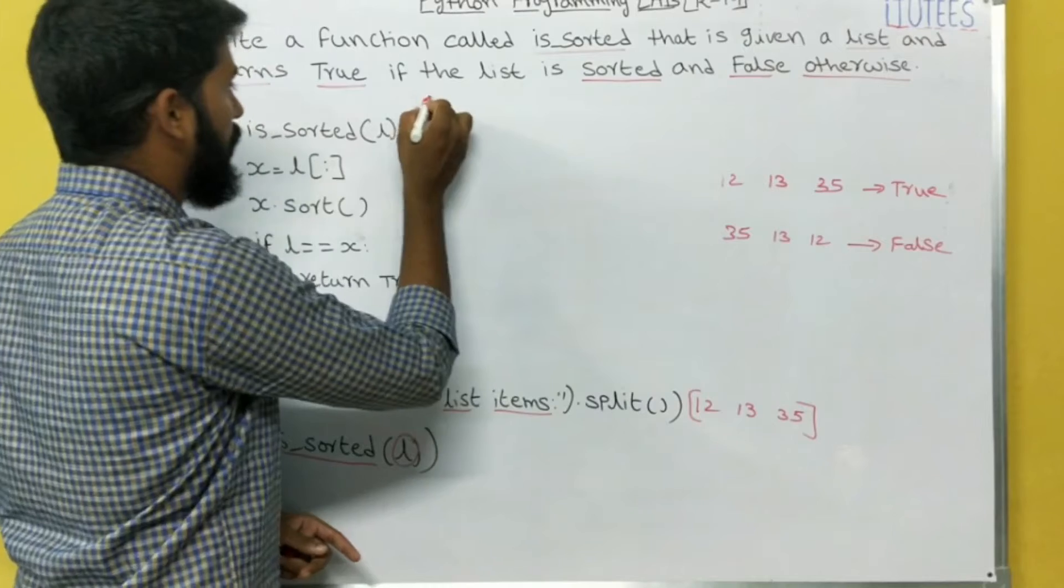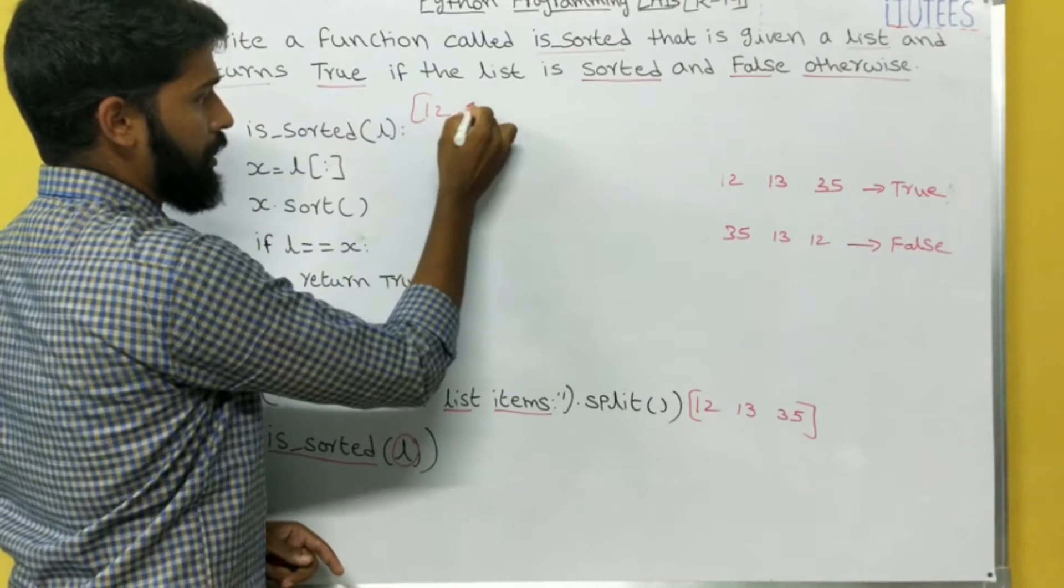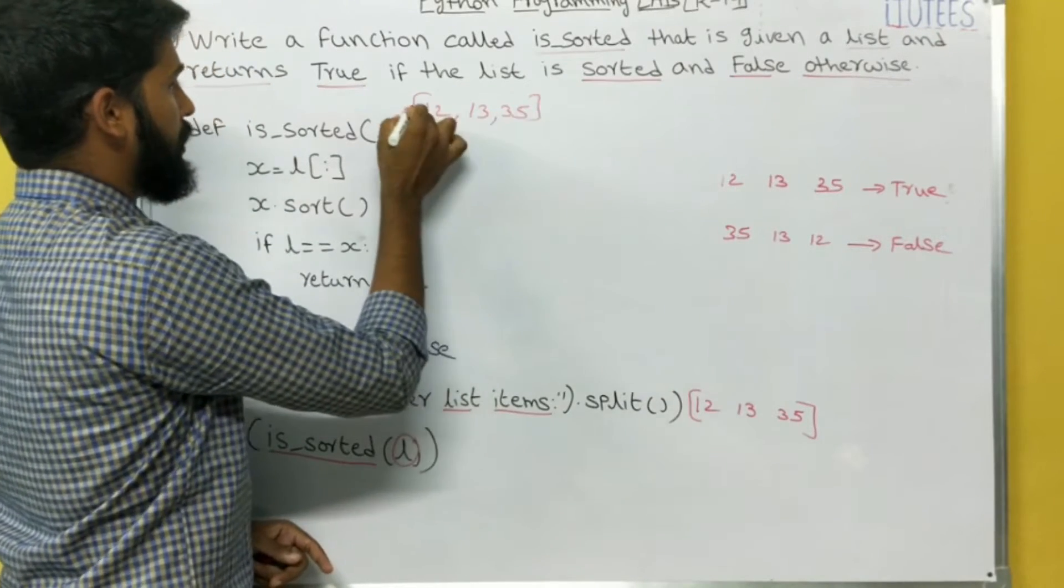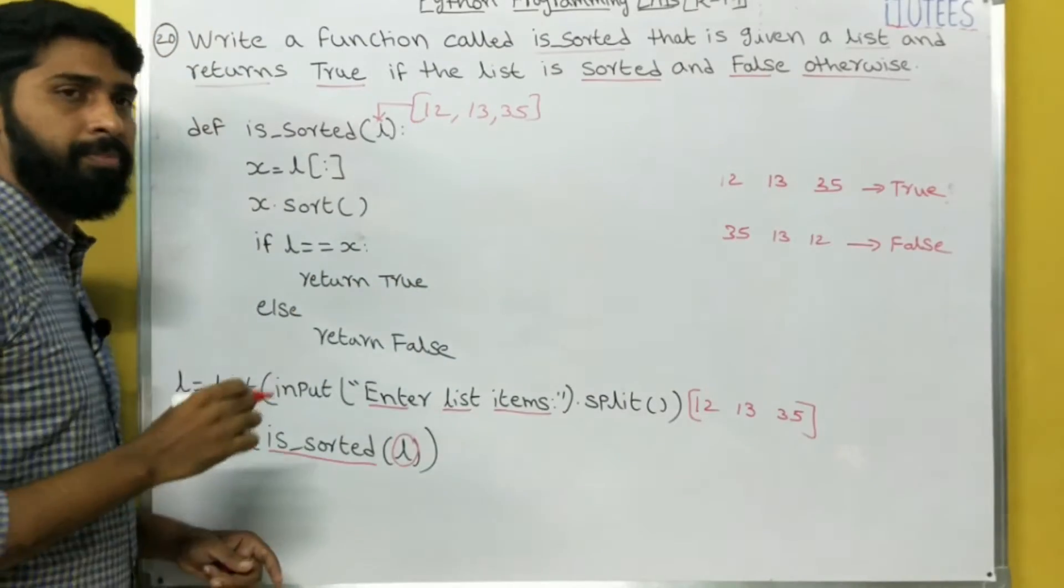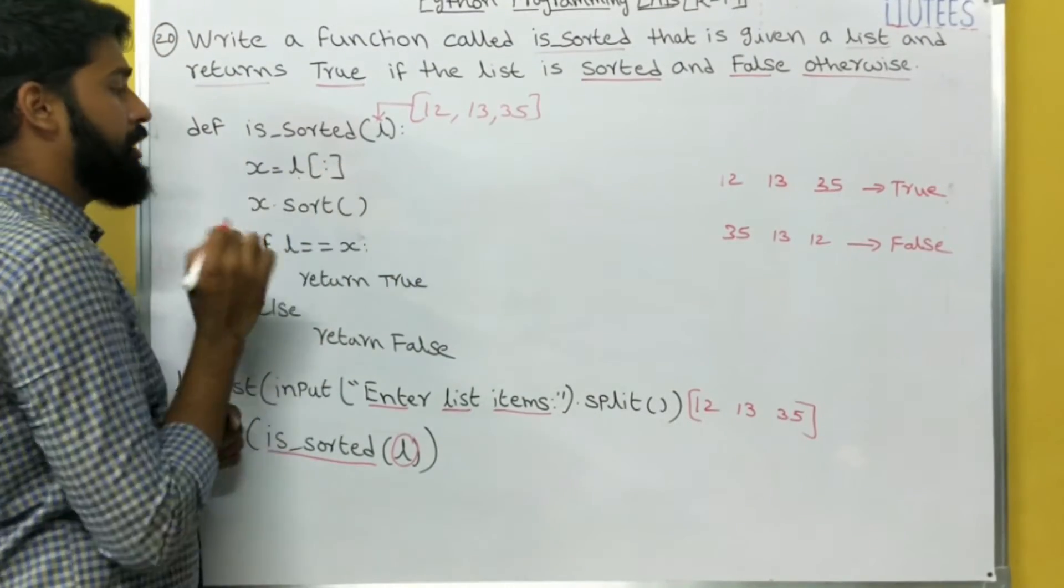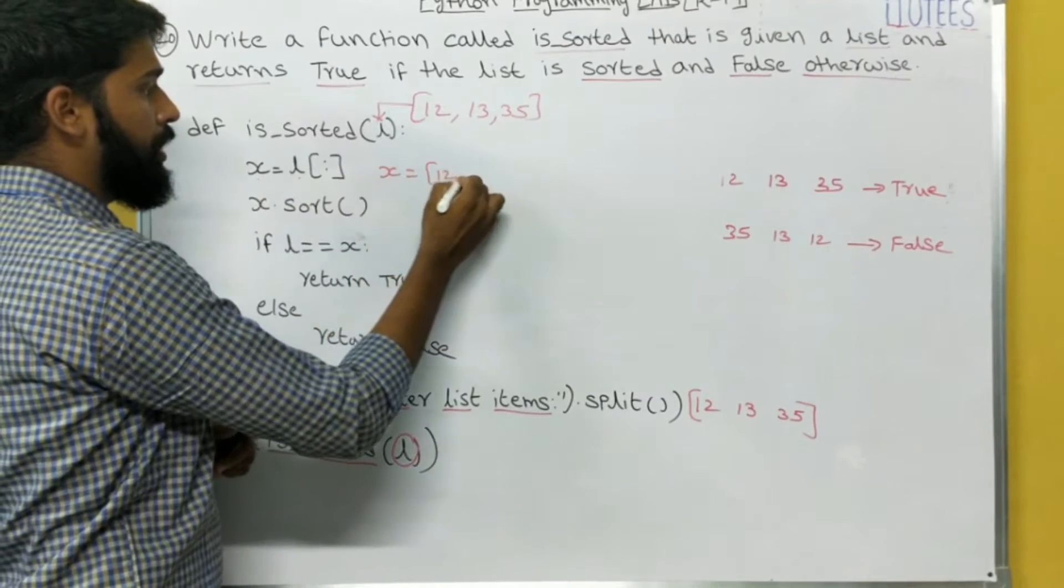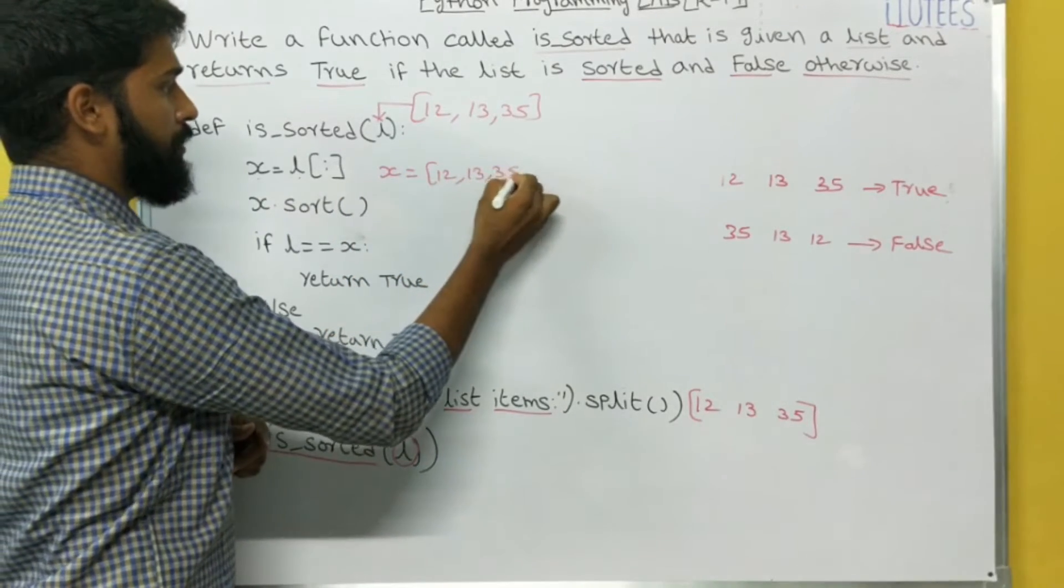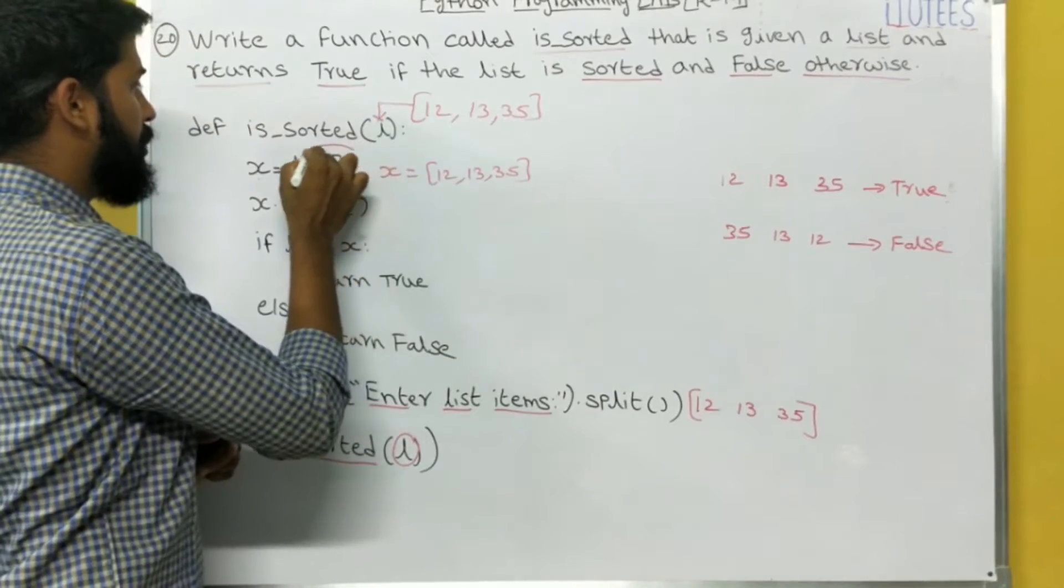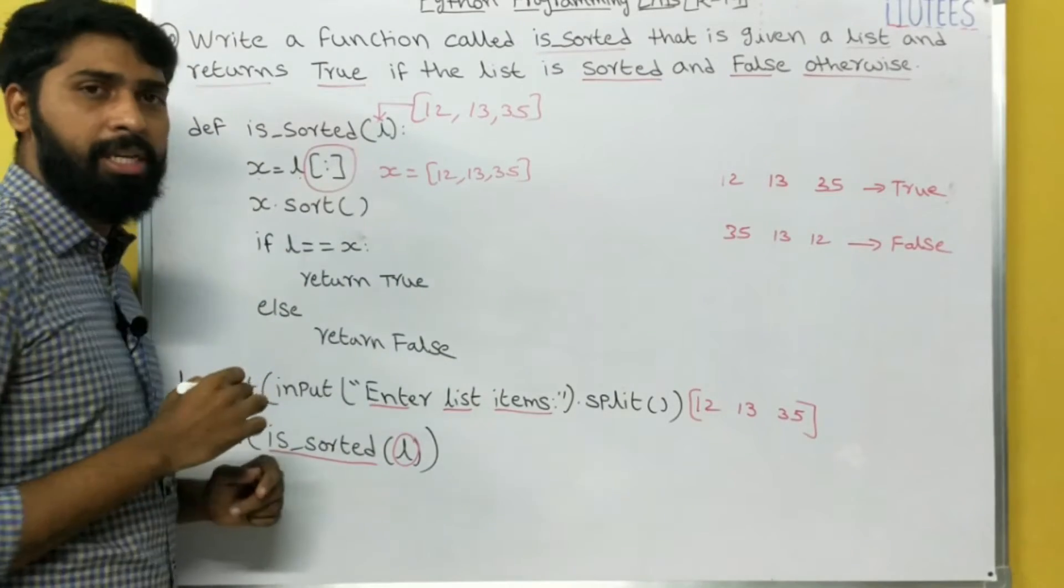That means 12, 13, 35 is assigned to L here. Now I store this L in X. That means X is also 12, 13, 35. Here we are using square brackets in X colon.